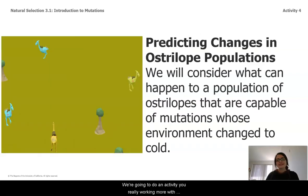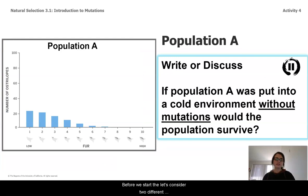And we're going to do an activity really working more with this idea of mutations by predicting changes in ostrilope populations. What we're going to do is consider what can happen to a population of ostrilopes that are capable of mutations whose environment is changing to be cold. Before we start though, let's consider two different situations.